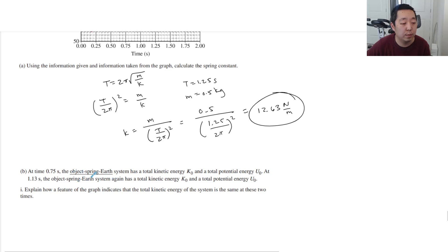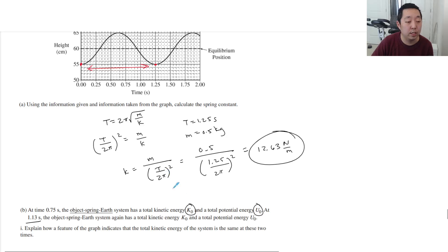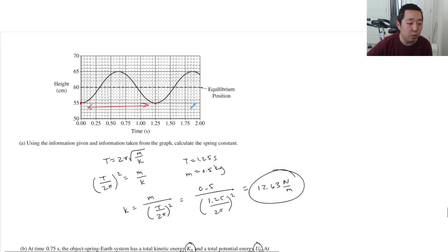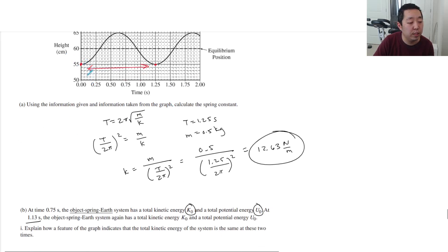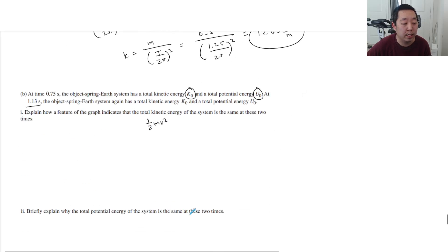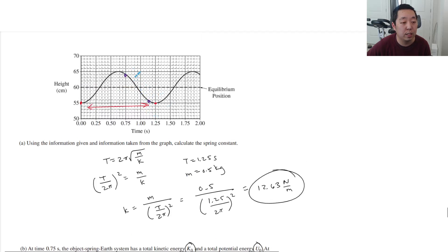At time 0.75 seconds, the object spring earth system has a total kinetic energy k0 and a total potential energy u0. At 1.13 seconds, the object spring system has a total kinetic energy k0 and a potential energy u0. Explain how a feature of the graph indicates the total kinetic energy system is the same at the two times. Feature of the graph. Well, if I'm talking about the kinetic energy, which times are we talking about? 0.75 is right here, and then 1.13 seconds is probably right about there.